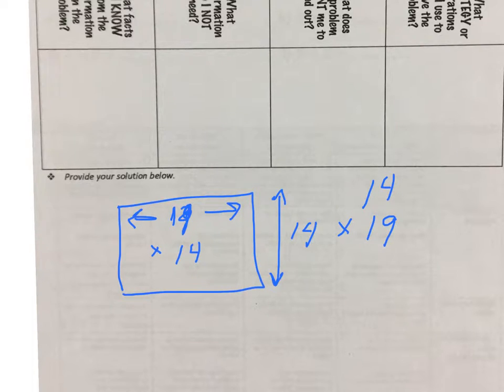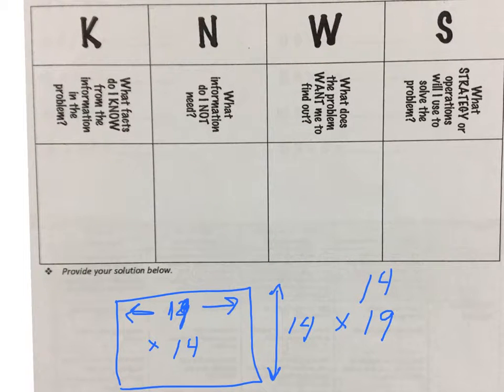I'll come back to that in a sec. What do I know? Well, I've got 19 rows, I've got 14 cars per row, but there's one other piece of information that's really important: 24 empty spots.